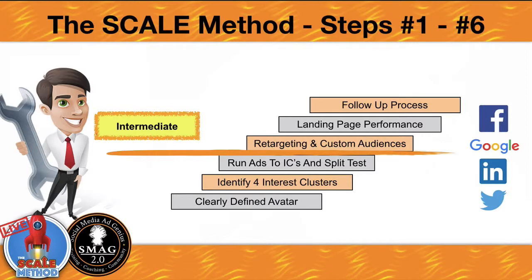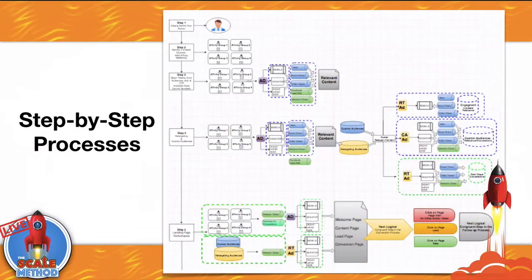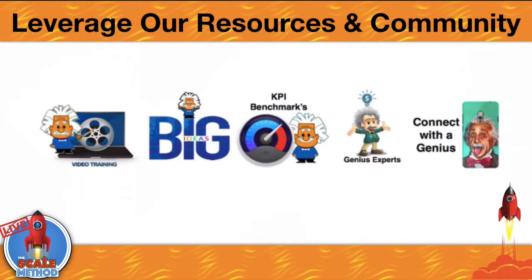For intermediate, we're adding three more steps — steps four through six — covering retargeting, landing page performance, and follow-up processes. These are principles that work on any of the major ad platforms. The genius level starts to come in with weekly content, weekly events, and weekly calls to action — this is where we really leverage that artificial intelligence. These ad platforms will target the best people for us and allow us to keep following up with people who haven't engaged with our brand using just their email address.